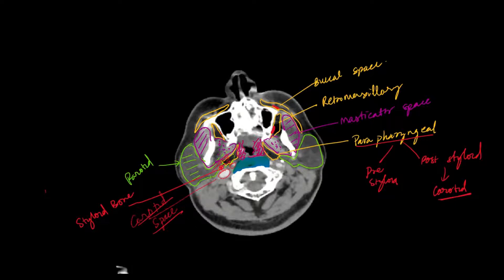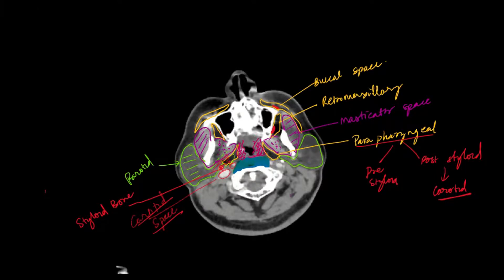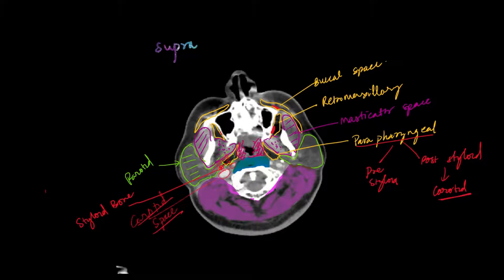There are two types of people: those who like to segregate things and learn, and those who like to combine things. I would stick with keeping the carotid space as a separate space. What I'm drawing in purple is the paravertebral space — the paraspinal muscles which are posterior to the vertebral body.